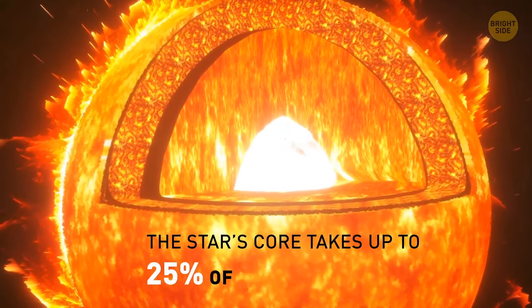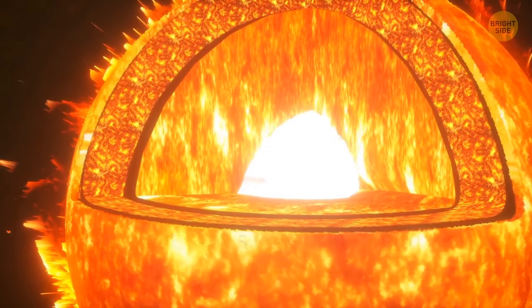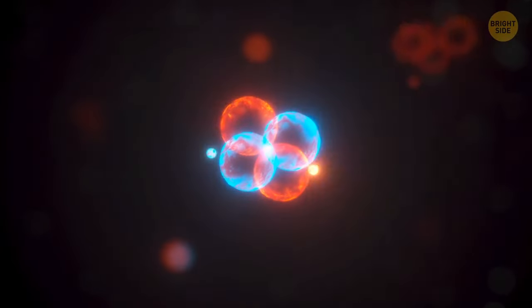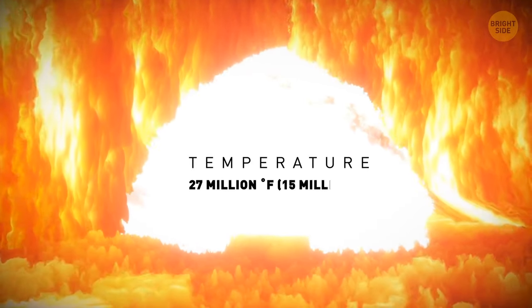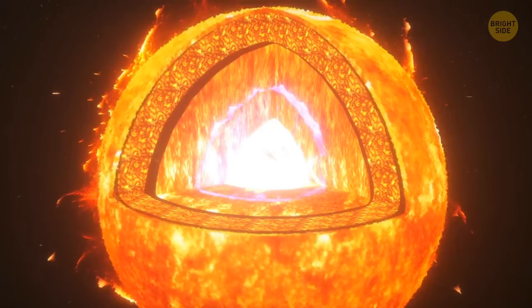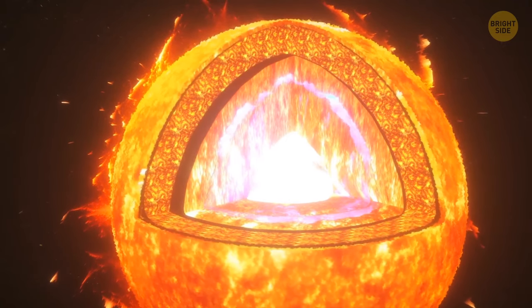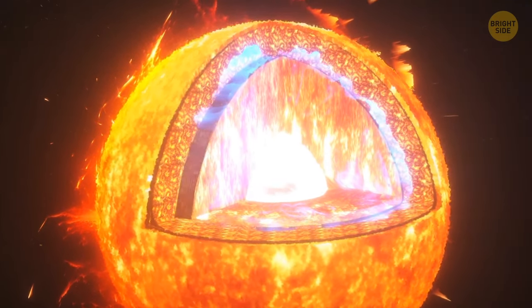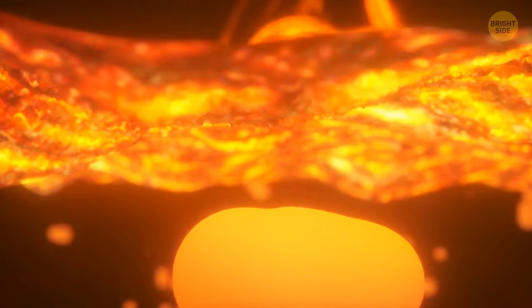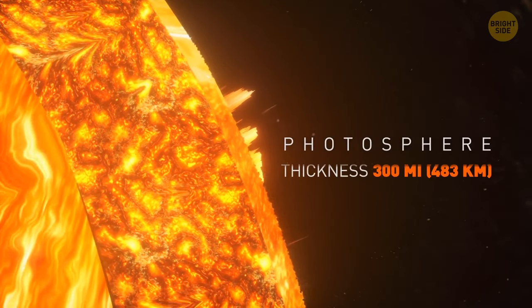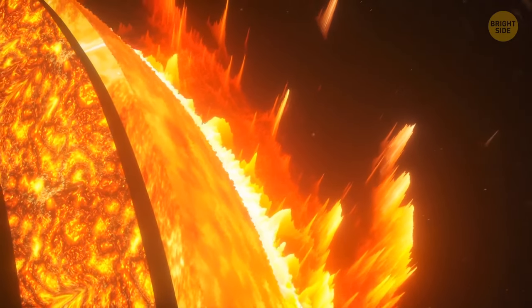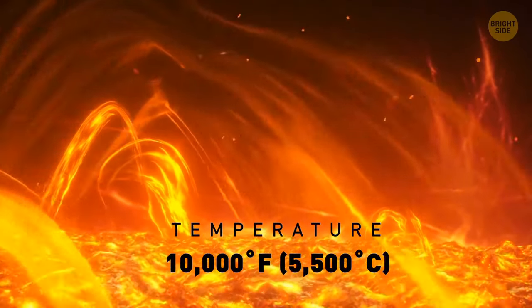The star's core takes up to 25% of its entire radius. Inside, gravitational forces create incredible temperatures and pressure, which makes hydrogen fuse into helium. This layer has a temperature of 27 million degrees Fahrenheit. All that energy moves to a zone called radiative. It takes on average 170,000 years for the energy to get all the way from the core to the next convective zone. There, bubbles of hot plasma float upward and end up at the Sun's surface. That's where a visible 300-mile-thick layer starts. This gassy zone is called the photosphere.